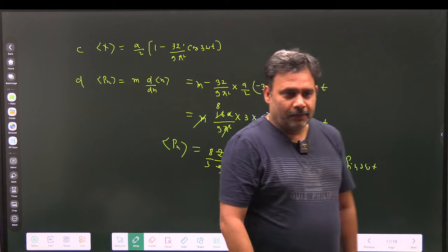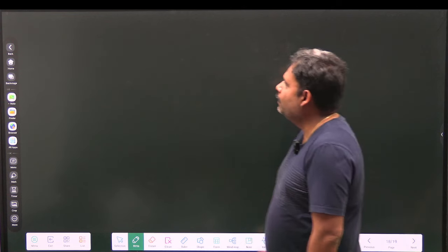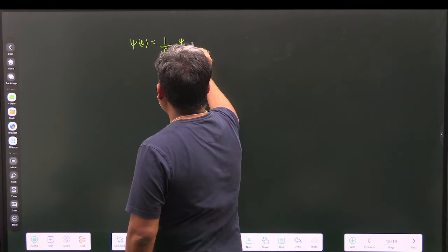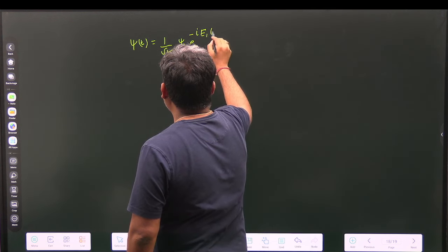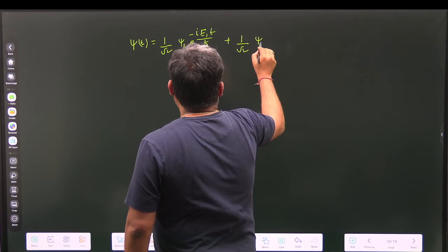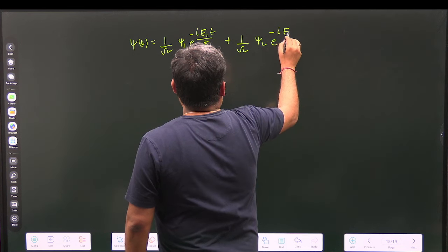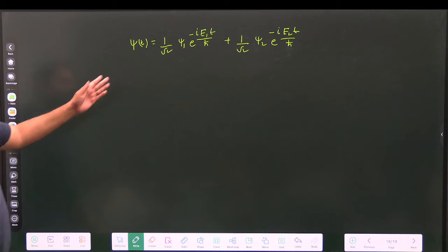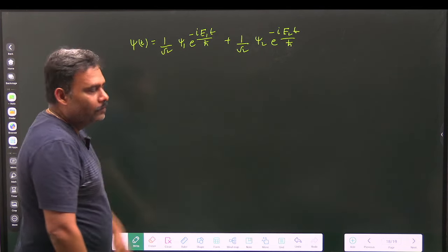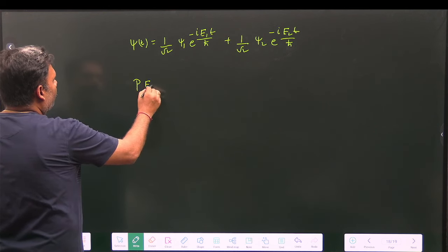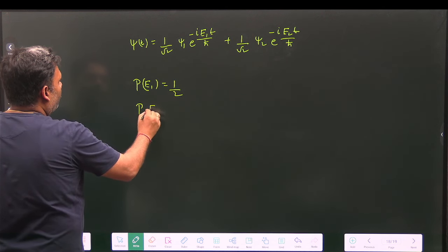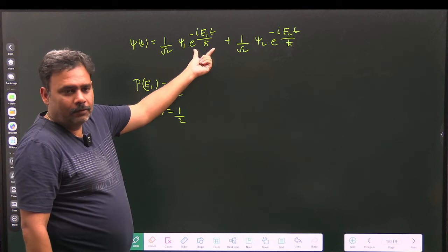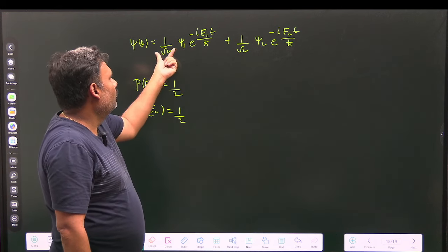For the final part, ψ(t) = (1/√2)ψ₁ e^(−iE₁t/ℏ) + (1/√2)ψ₂ e^(−iE₂t/ℏ). When we measure the energy (Hamiltonian), we will measure either E₁ or E₂. The probability of measuring E₁ is 1/2, and the probability of measuring E₂ is also 1/2. The exponential time factors are just phases and do not affect the probabilities.